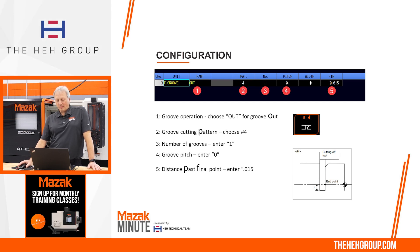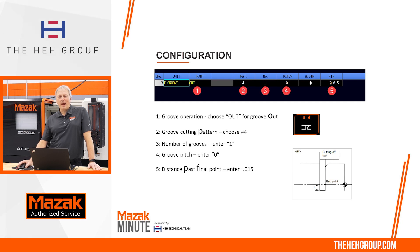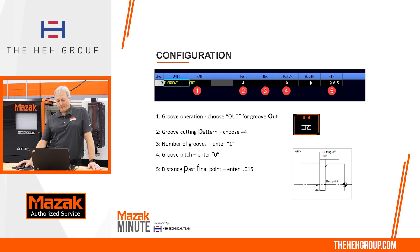And finally, number five there on the screen — the finish. That's 15 thousandths below center. So when I cut off, if you look at the small picture on the bottom of the screen, that is going 15 thousandths past center line. In the Mazak control, we don't have the ability to type in a negative 15, so we go with the finish of 15.